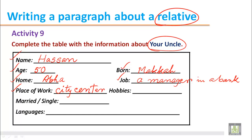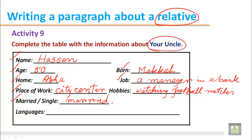Hobbies: what does he do in his free time? Maybe watching football matches, maybe fishing, maybe swimming, maybe reading. You write what he likes to do in his free time. Married or single: if he is married, just write he is married and you can add a little information about his family like sons or daughters. If he has two sons and two daughters, you can write here.